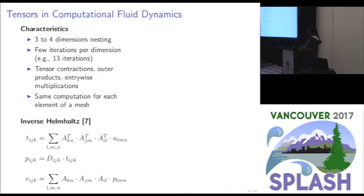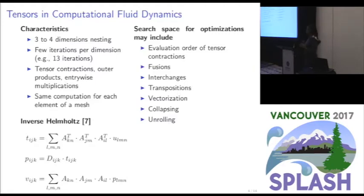The computation has three parts. The first part is a tensor contraction between a matrix and a 3D tensor on three axes of the tensor. The result is used to compute another intermediate tensor via an entrywise multiplication. Then this new result is used to compute another tensor contraction, this time with the non-transposed axis of A.